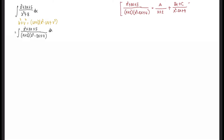The next step is to multiply everything by the denominator (x plus 2)(x squared minus 2x plus 4) to eliminate the fractions. On the left side, only the numerator x squared plus 3x plus 5 remains. On the right side, for A we cancel x plus 2, so A is multiplied by x squared minus 2x plus 4. For Bx plus C, we cancel x squared minus 2x plus 4, so we multiply that by x plus 2.